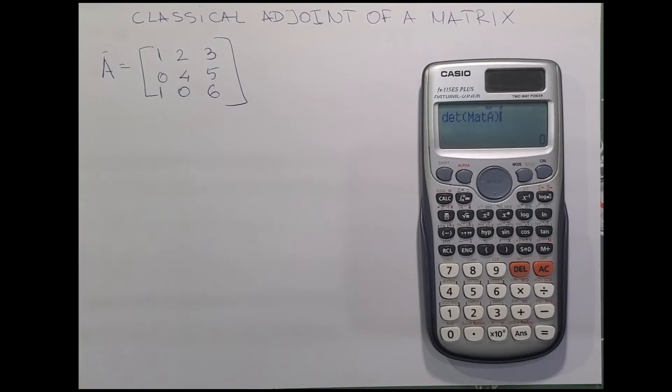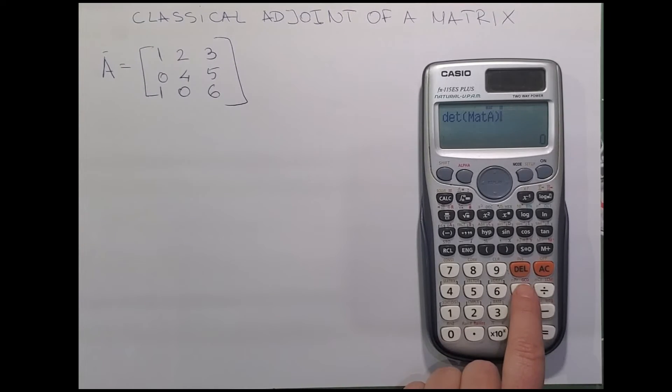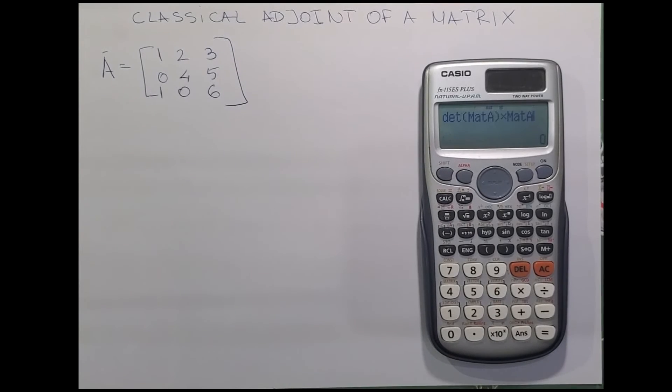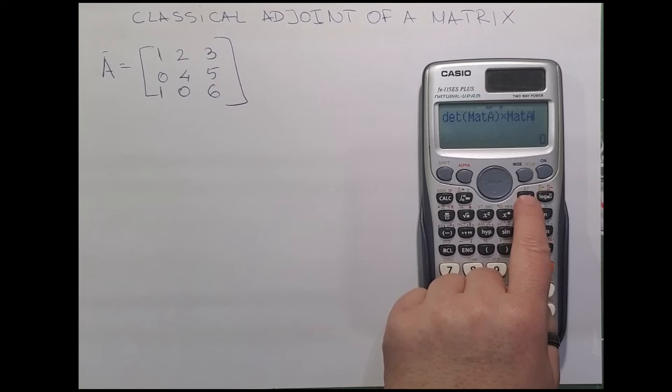Close the brackets, and as we said before, it is a multiplication by the inverse of the same matrix. So SHIFT again, matrix, 3 for matrix A, and then inverse here.